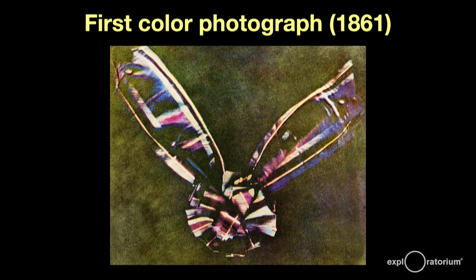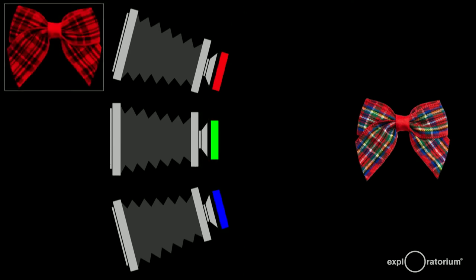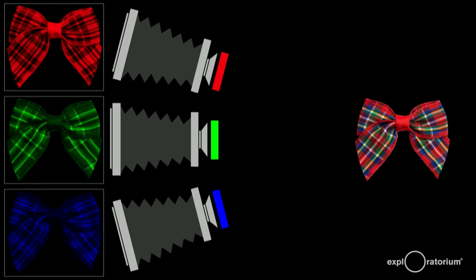He also took the very first color photograph, which you see here, of a colorful tartan ribbon. The lengthy process he went through to produce this color image is interesting. He put his ribbon, I'm using a bow, in front of three cameras. In front of the camera lenses, he placed three filters, red, green, and blue. He then took three photos. The camera with the red filter only captured the red light from the ribbon. The camera with the green filter only captured the green parts of the ribbon, and the blue filtered camera only the blue parts of the ribbon. Note the differences in the photos.